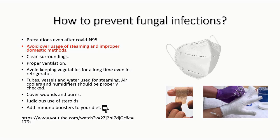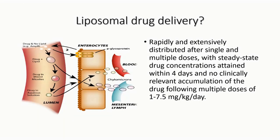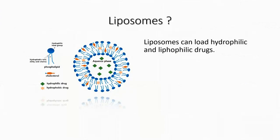The treatment includes liposomal Amphotericin B, which is better than the conventional form because the conventional may lead to renal failures. The liposomal drug delivery involves micelle formations, and these micelle formations give a steady-state drug concentration, reduce renal toxicity, lodge both hydrophilic and lipophilic drugs, and release the drug in a controlled fashion.